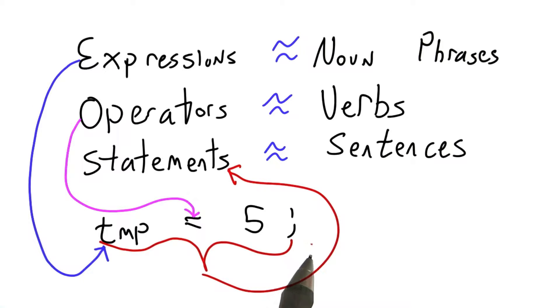This whole thing together is a statement. It involves two expressions, temp an identifier, 5 a number, and an operator, the assignment operator.